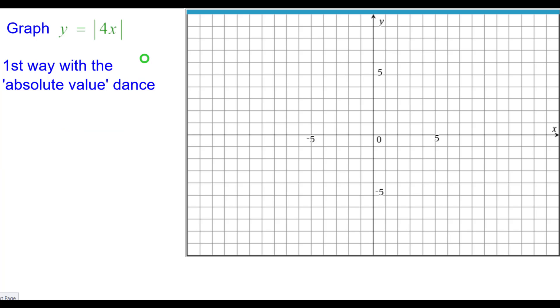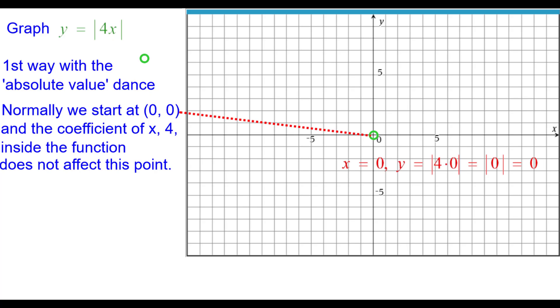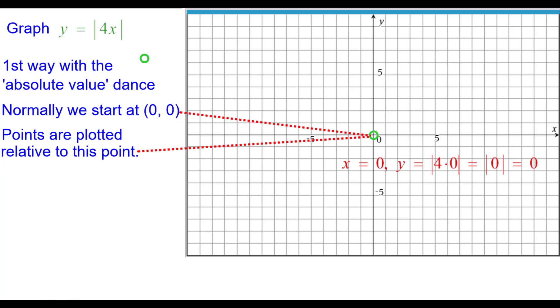The first way is with what we call the absolute value dance. Normally we start at the origin and the coefficient of 4 that is inside the function does not affect this point. As you can see when x equals 0, y is also equal to 0 and all points will be plotted relative to this point.